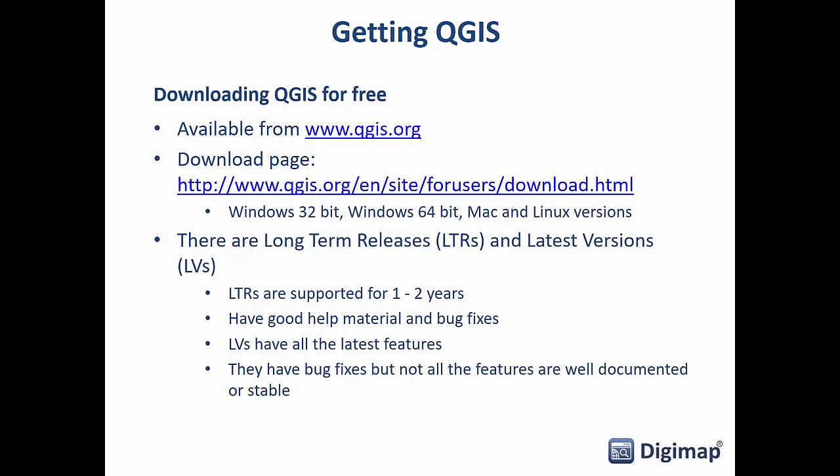You download QGIS for free from qgis.org — it's free and open source software with no restrictions on how or where you can use it. It comes in Windows 32-bit and 64-bit, and also Mac and Linux versions. There's no need to connect to any kind of license server, so it's really flexible. You can install it on your laptop and desktop and interchange where you're working by sharing your data and map documents.